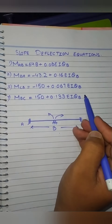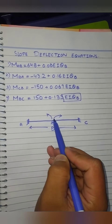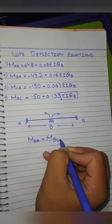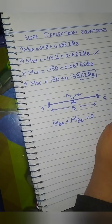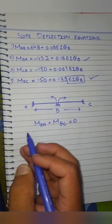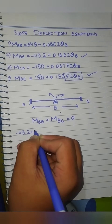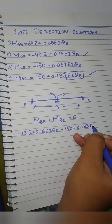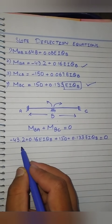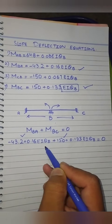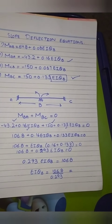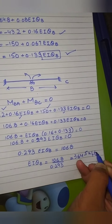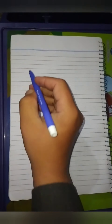Now we apply the joint equilibrium equation at B. At joint B, MBA + MBC = 0. Substituting: (-43.2 + 0.16·EI·θB) + (150 + 0.133·EI·θB) = 0. Adding constants and θB terms: 106.8 + 0.293·EI·θB = 0, which gives EI·θB = -364.5 kips.